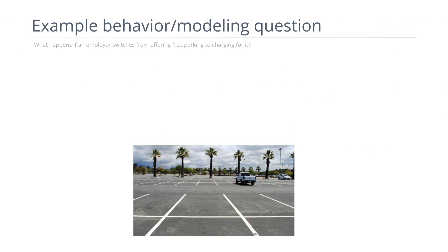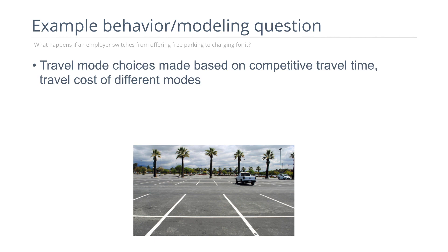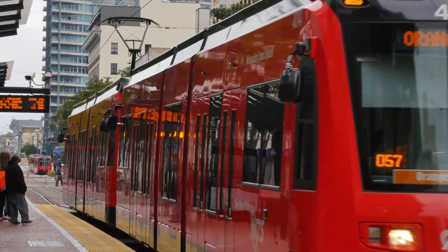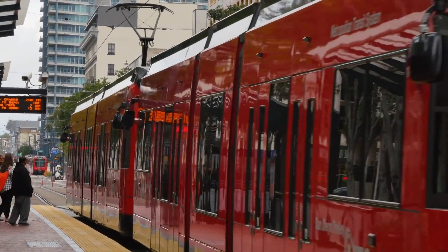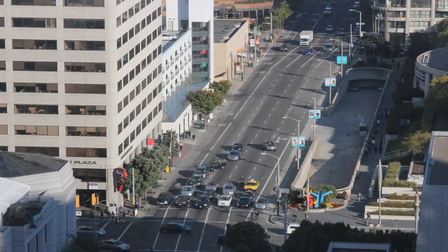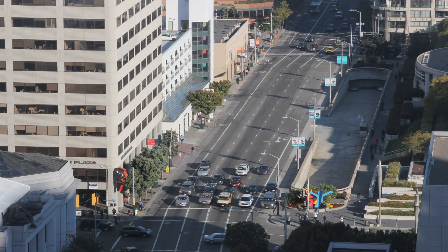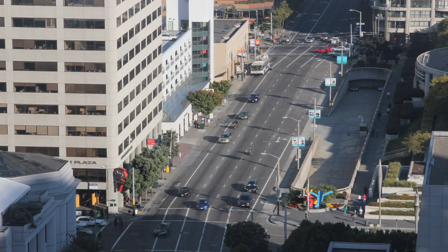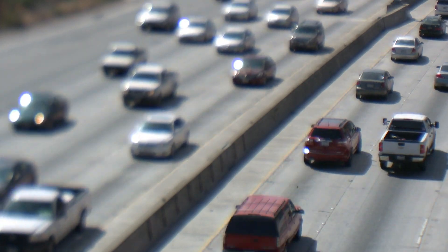An example question that a model could deal with is: what if an employer switches from offering free parking at the worksite to charging for it? Will travel behavior change? Will the people at that worksite start using transit, carpooling, or other modes more frequently? Or will it have no effect? Economic theory suggests that commuters are responsive to the cost of their commute.